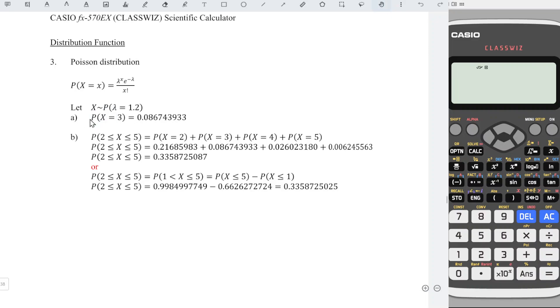Part A, determine the probability of X equal to 3. First, press menu. Look for the 7 function distribution. Press down. Choose Poisson PD, probability distribution. Since we are asked for only one value of X, choose variable. X is equal to 3. Press equal. Lambda equal to 1.2. Press equal. Equal again to obtain the correct probability.